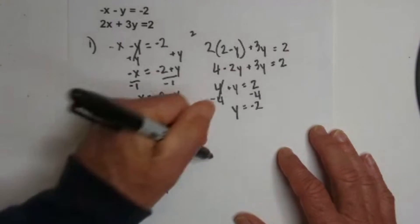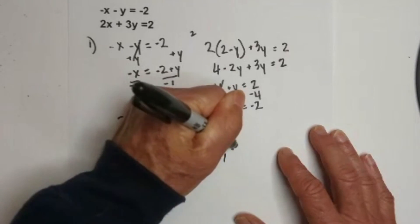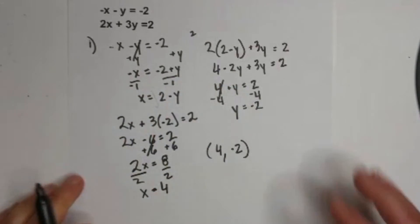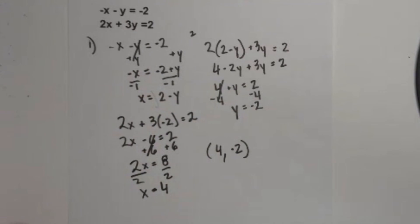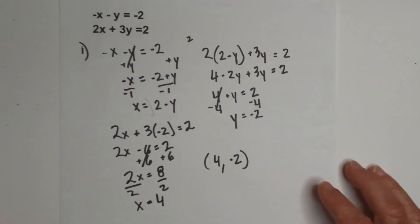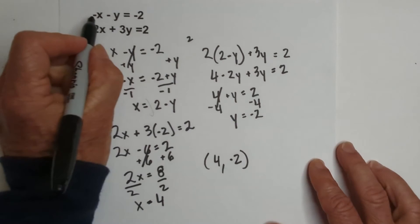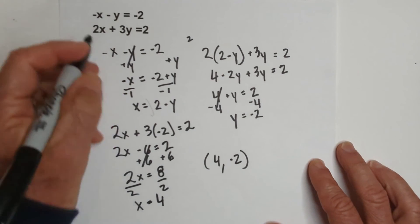And then divide through by 2 and x = 4. So, now I have x is 4. Y is -2. Now, let's check our work. And here's how I'm going to check the work. I'm going to plug it into the equation I didn't use.